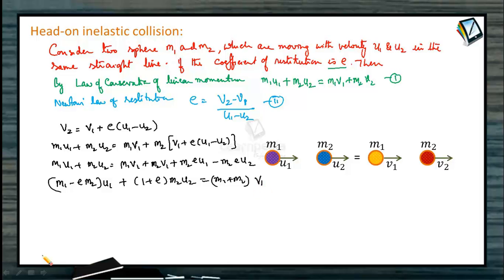Simply we can get the value of v1. What will v1 be equal to? So it will be m1 minus e times m2 divided by m1 plus m2 into initial speed u1 plus 1 plus e times m2 divided by m1 plus m2 times u2.